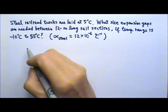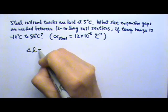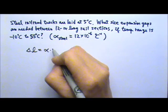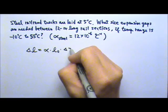We can use the linear expansion equation. Delta L is alpha times L0 times delta T.